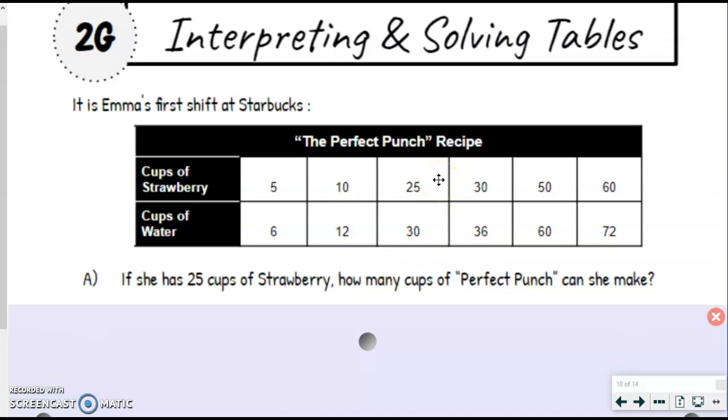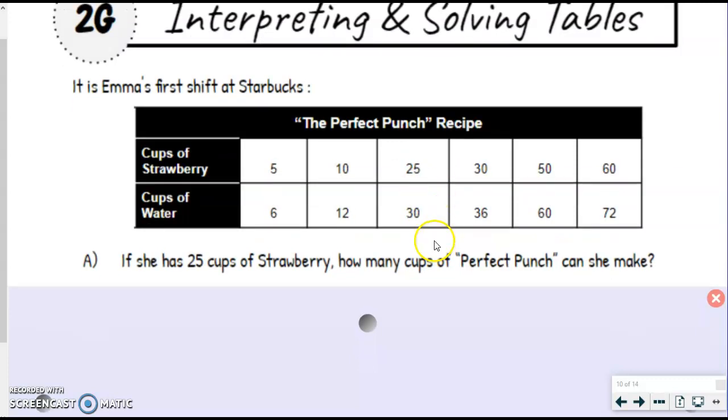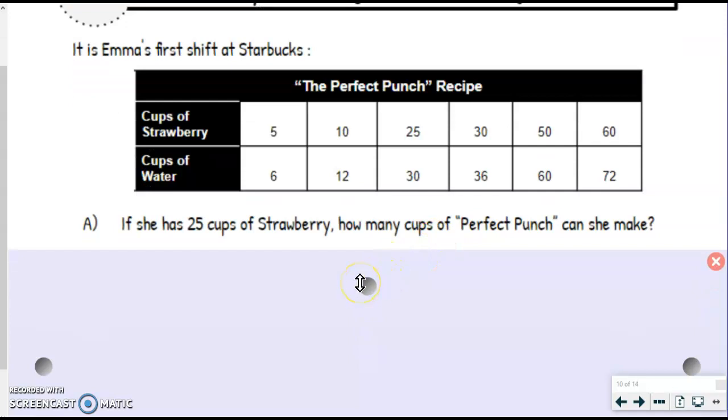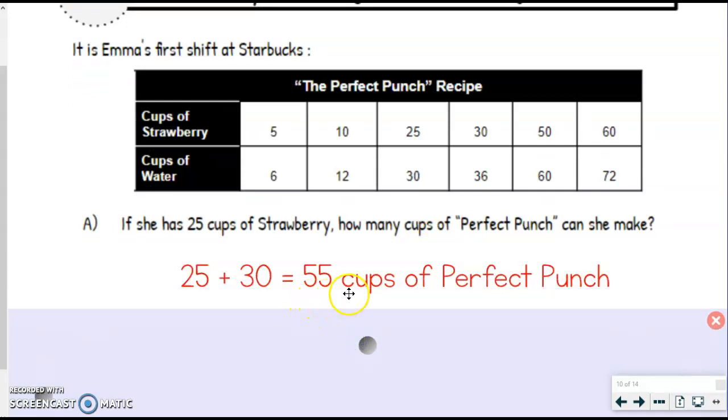We want to know how many cups of Perfect Punch can we make. That's when we take the strawberry and the cups of water and put them together. We're going to do 25 plus 30. That answer is how much Perfect Punch we can make. So 25 plus 30 equals 55. So it'd be 55 cups of Perfect Punch.